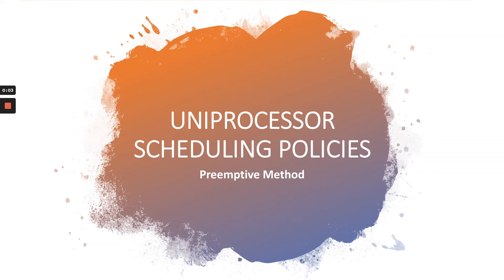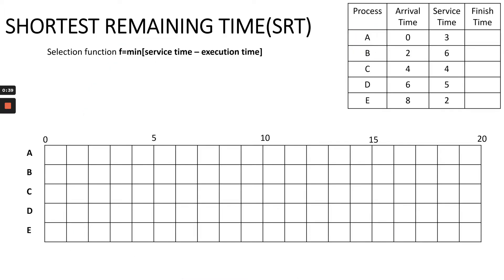In this video, I will talk about the preemptive method for uniprocessor scheduling policies. Under preemptive policies, a running process can be switched out for a different process before it finishes its operation. The switch out is based on certain preemptive conditions such as a clock interval or the arrival of a new process to the ready pool. Under preemptive method, we have two well-known policies: Shortest Remaining Time (SRT) and Round Robin.